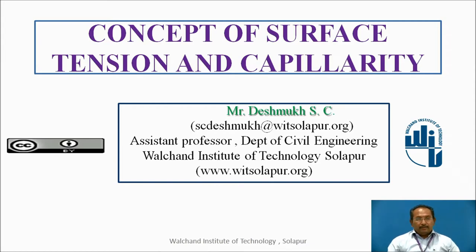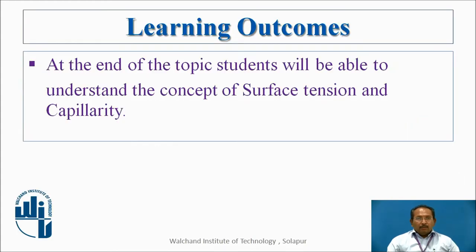We are already knowing many of the fluid properties, but particularly surface tension and capillarity are very important from a civil engineering point of view. Almost every property is important, but surface tension and capillarity are much more relevant to civil engineering. By the end of this topic, you will understand the concept of surface tension and how capillarity behaves — both in the upward and downward direction.